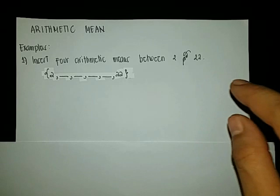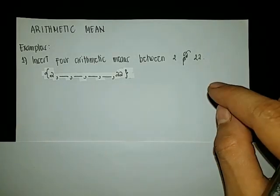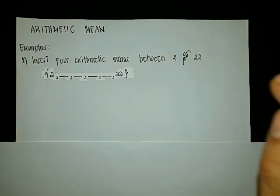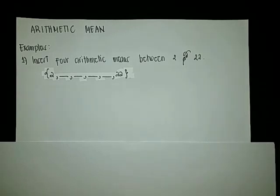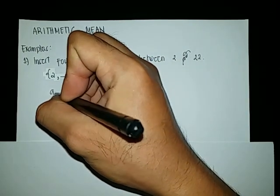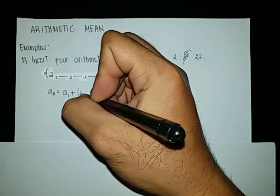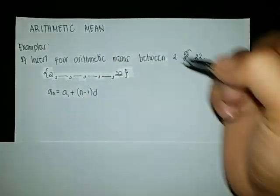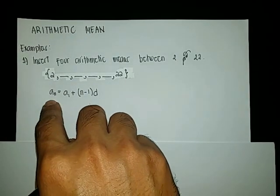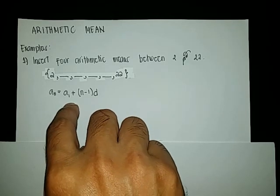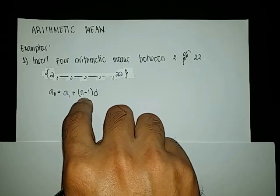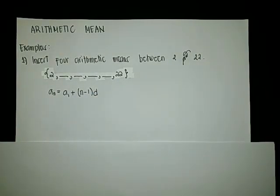Since this is an arithmetic sequence, each term must have a common difference. So let us solve for the common difference in order to insert the arithmetic means. We are going to use the formula for an arithmetic sequence: a sub n equals a sub 1 plus the quantity of n minus 1 multiplied by d. Here, a sub n is the last term, a sub 1 is the first term, n is the total number of terms, and d is the common difference.